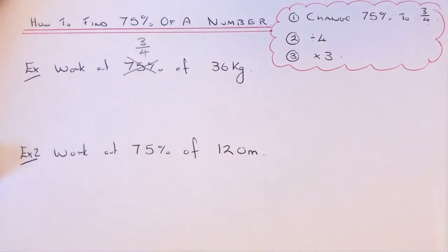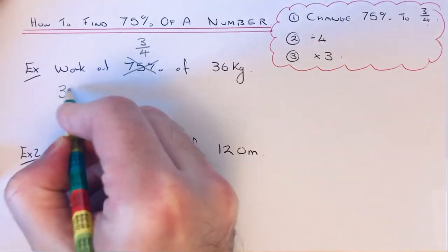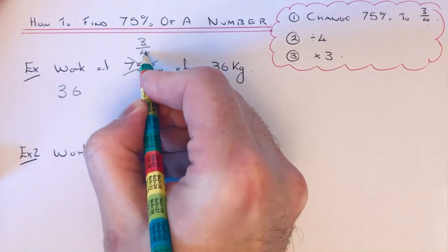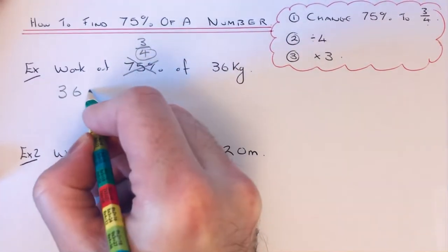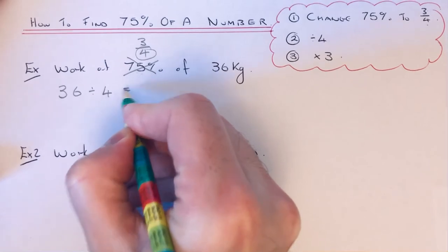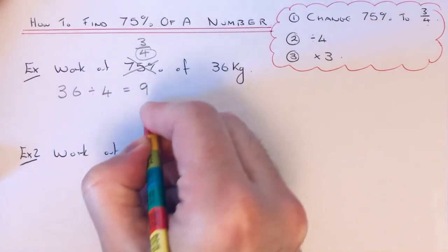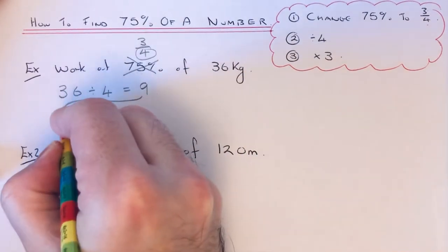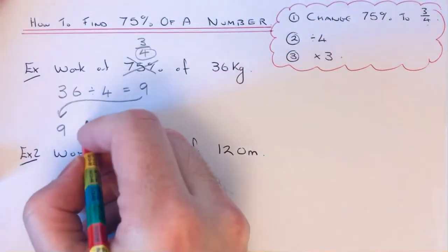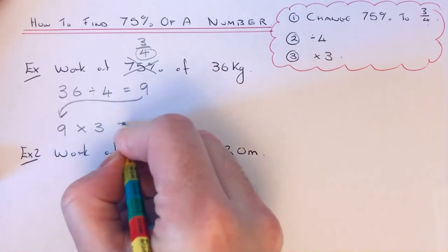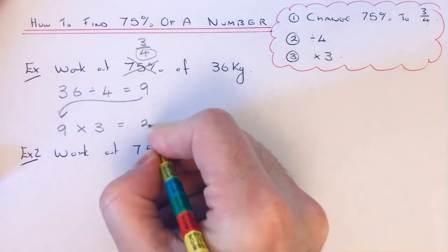Put 36 on the next line. We divide by that four on the denominator, so 36 divided by four goes nine times. Get that answer, put it on the next line, and we times that by the top number which is three. So we do nine threes which are 27.